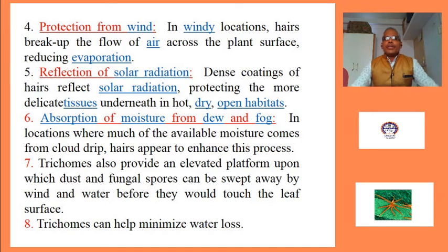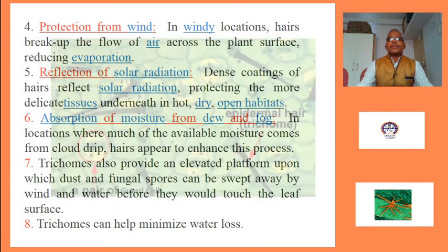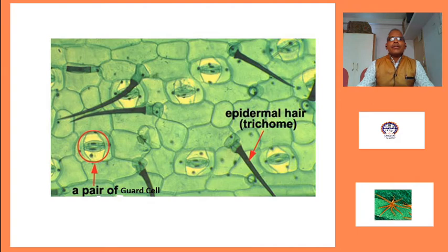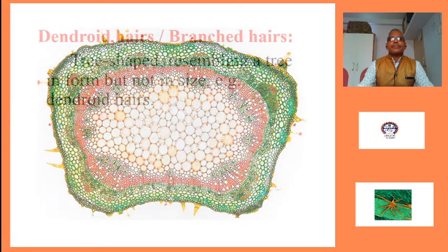6. Absorption of moisture from dew and fog: In locations where much of the available moisture comes from cloud drip, hairs appear to enhance this process. Trichomes also provide an elevated platform upon which dust and fungal spores can be swept away by wind and water before they touch the leaf surface. 7. Trichomes can help minimize water loss. 8. These are the trichomes on the upper surface of the plant body. These are the sectional view of the stem showing some trichomes arising on the epidermis.